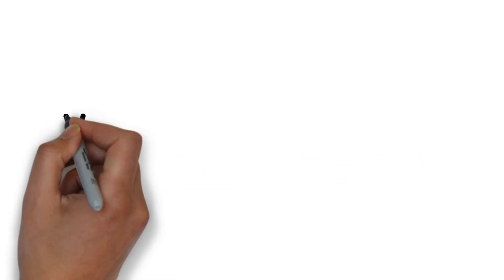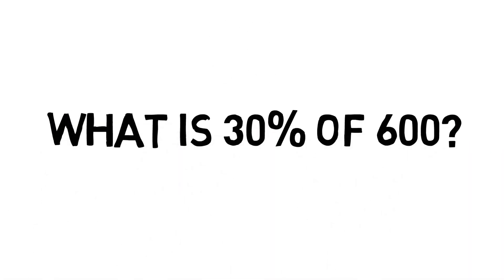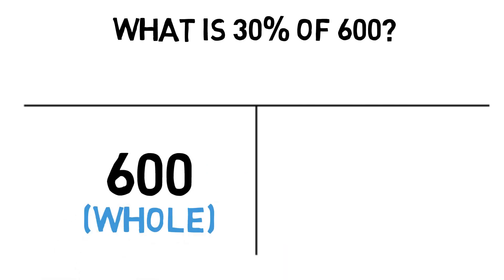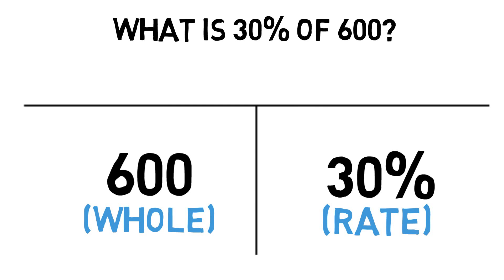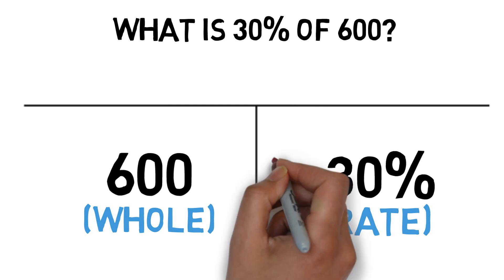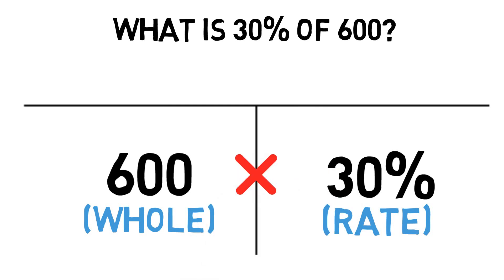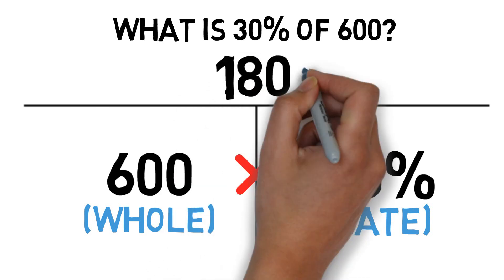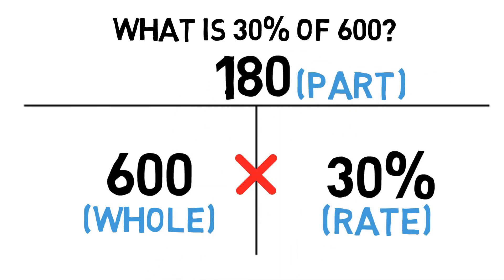So a question might say, what is 30% of 600? In this case, 600 is the larger number, it goes on the bottom left for the whole amount. Our rate is 30%, which goes on the bottom right for the rate. Our formula tells us to multiply straight across. So we would take 600 times 30%, and that would give us the part where our answer of 180. Our answer would be 180.